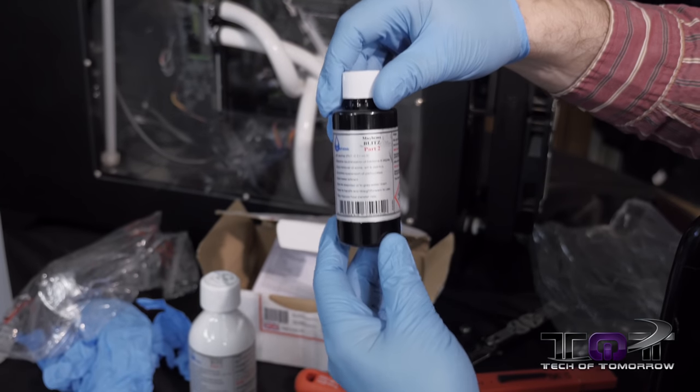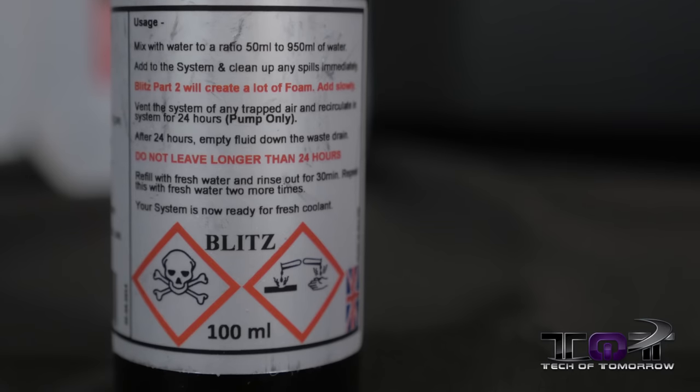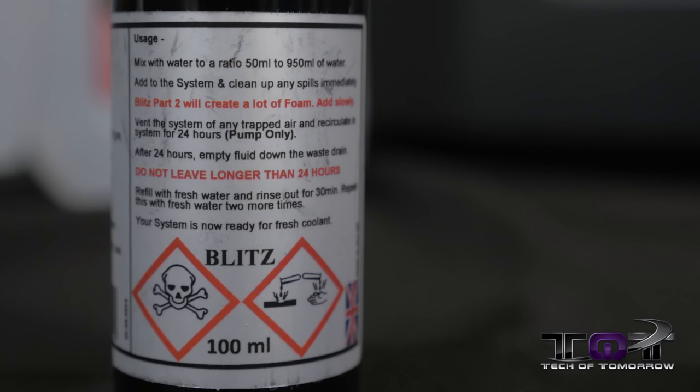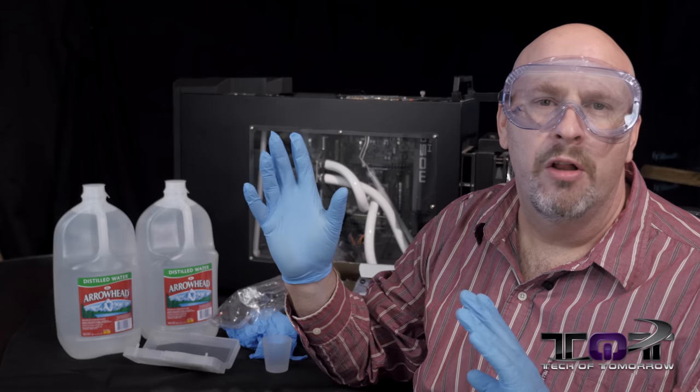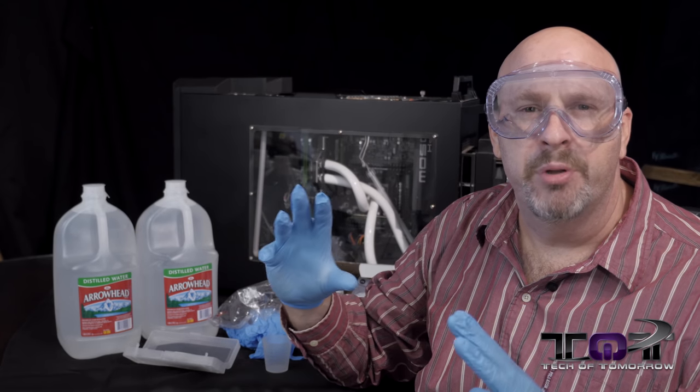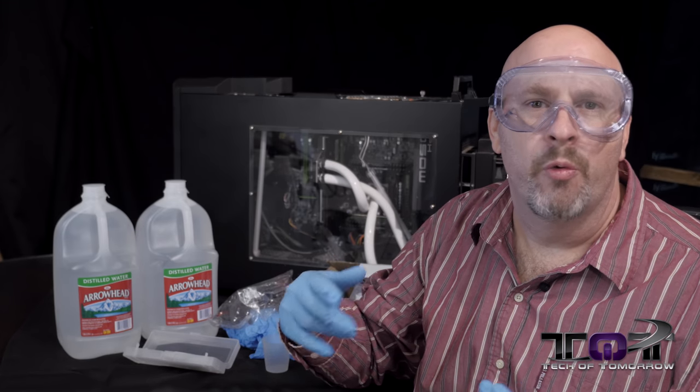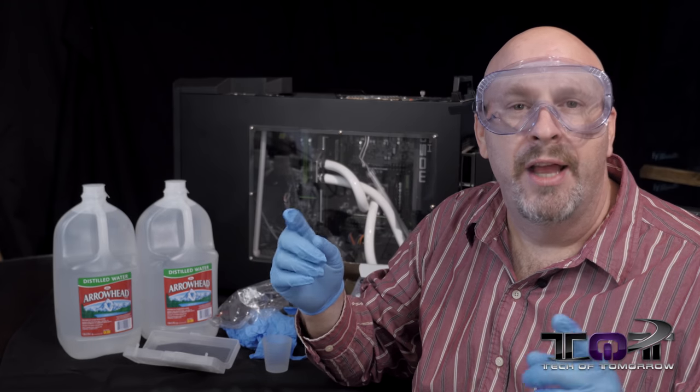Part one gets everything ready and cleaned out that's gunky. Then part two cleans all those bad trace minerals out completely. Part two you can run your system for up to 24 hours, no longer. Then you completely drain the system and start from scratch refilling with your new liquid.